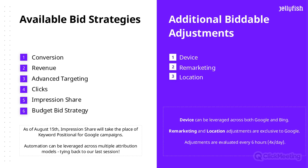Your Bing campaigns or other engines can still run keyword positional following August 15th — that would be based off of positional constraints you're willing to stay within. But it will no longer be applicable within Google as of August 15th.